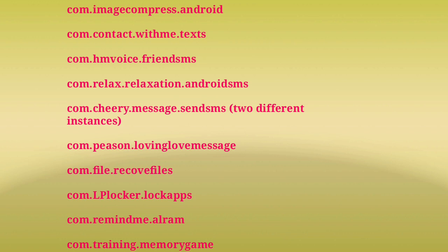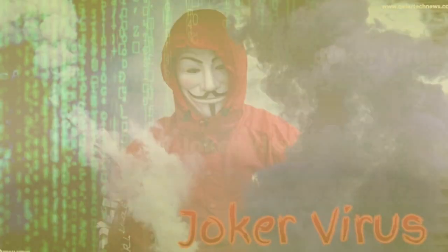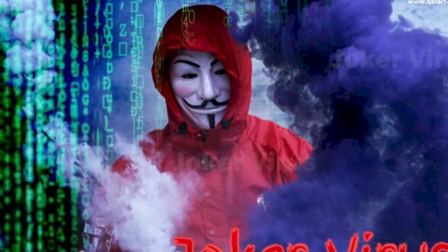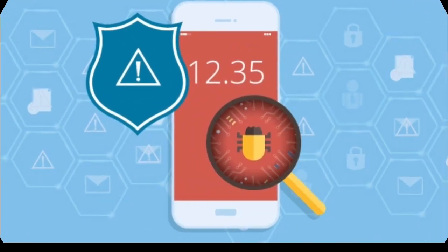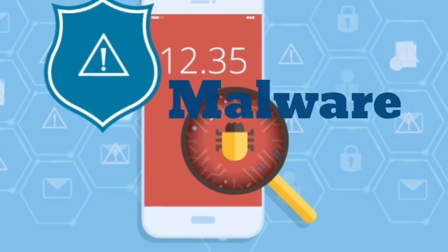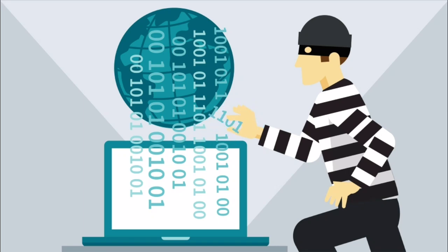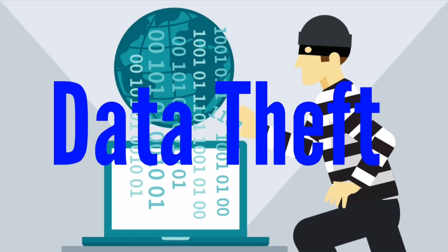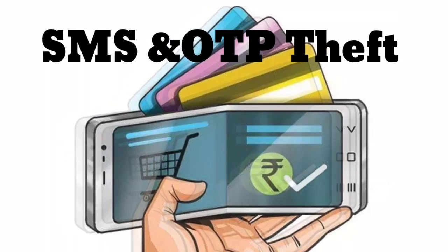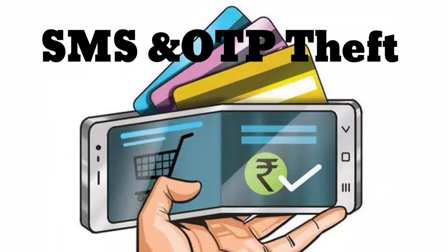That is too dangerous to your personal data. Joker virus is a type of computer virus or malware that is capable of stealing your personal data. Once this virus enters your device, it will keep monitoring your device without your permission. It can steal your personal data such as SMS, OTP, bank account details, UPI transaction details, etc. Using the bank account details and the OTP from the SMS, the hacker can easily steal your money from your bank account.